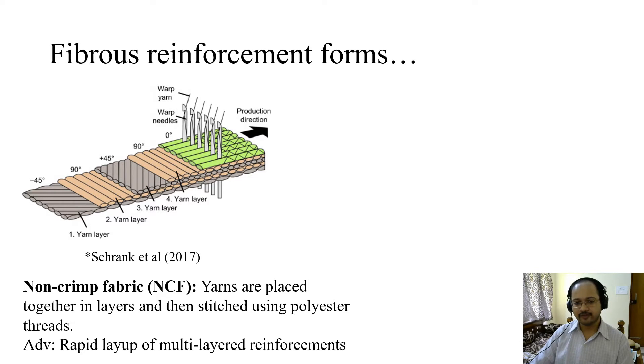Now coming to non-crimp fabric (NCF). Non-crimp means there is no crimp. If it is non-crimp fabric, the dimension of the fabric will be equal to the dimension of the yarns if the yarns are laid along the length or width of the fabric. Take this example of 90 degree yarns. I know this dimension, and this is the dimension of the fabric. Since these are laid parallel to this direction, this length will be same as the length of the individual yarns. That is what is called non-crimp fabric.